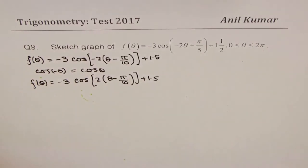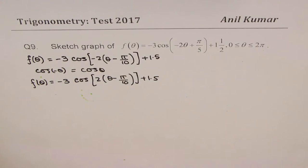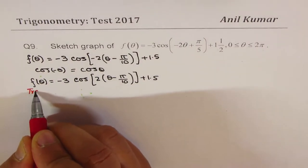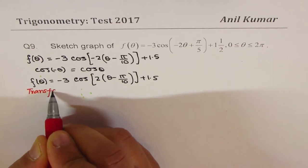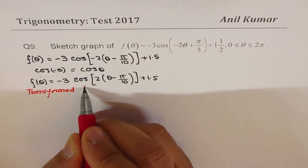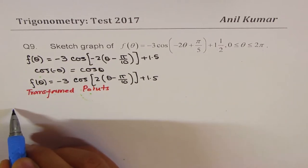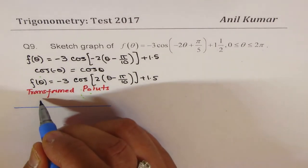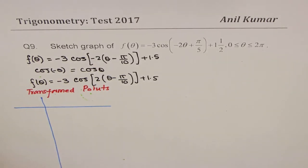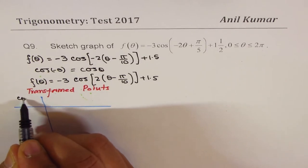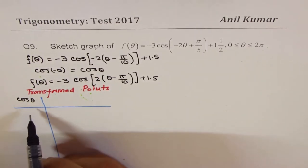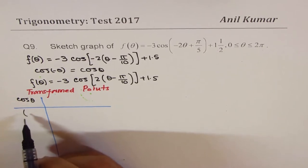To sketch this function I will apply two different methods. The first is transformation of points - we'll take the key points, transform them, and get the graph. I'm not using graph paper here, but normally in a test you will be given one. For the cosine function, the key points you need to look at are as follows.